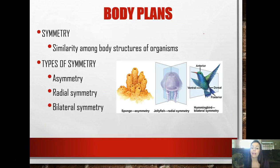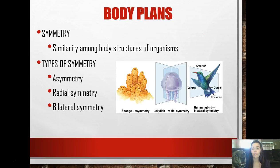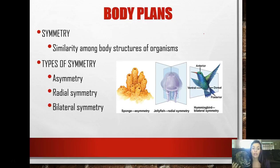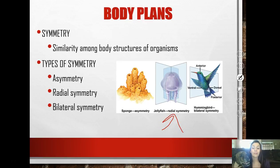There are also body plans we need to discuss. Symmetry in general is just the similarity among body structures of organisms. Not everything is exactly the same - if you cut a human down the middle, they're not going to be absolutely symmetrical, but that's still considered bilateral symmetry. Radial symmetry is where you can divide the animal on many planes, like the jellyfish shown here. Asymmetry is things like the sponge - they really don't have any symmetry at all.